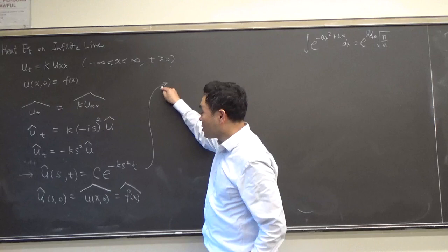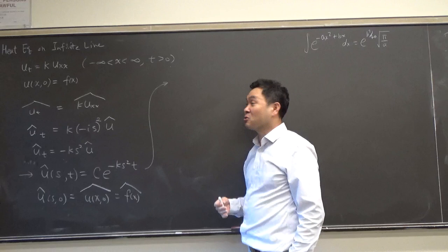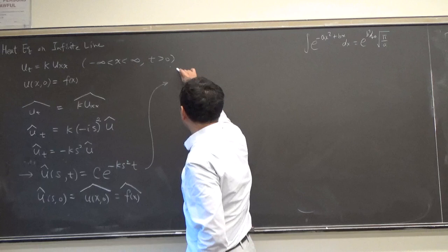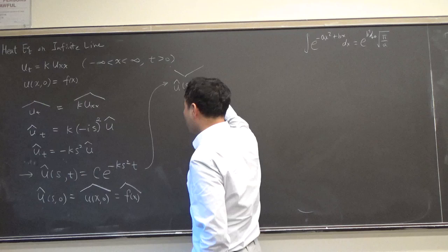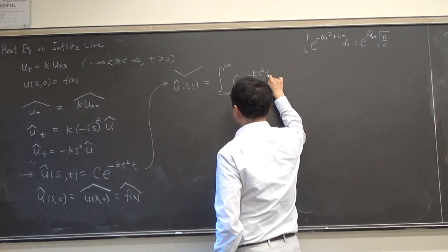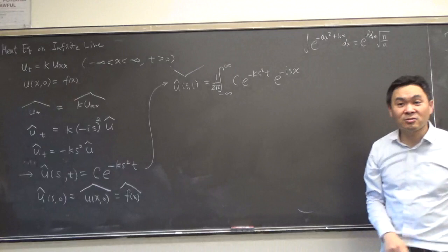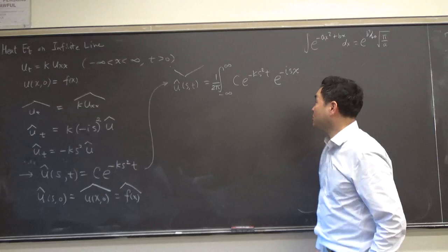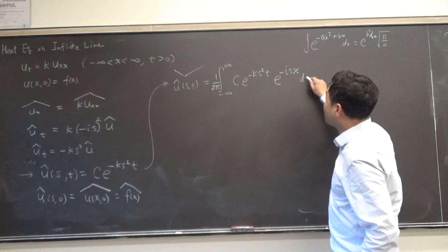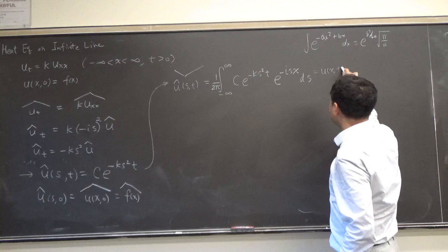Okay, so the solution seems to pop up amazingly fast. However, we're not done yet, right? What do we have to do? Always the trade-off of replacing derivatives by some simple algebraic operation is that you have to invert the transformation. So we have to do the inversion. So let's actually do the inversion. So inversion of u hat s t is the integral from negative infinity to infinity of c times e to negative k s squared t times e to negative i s x with one over two pi.